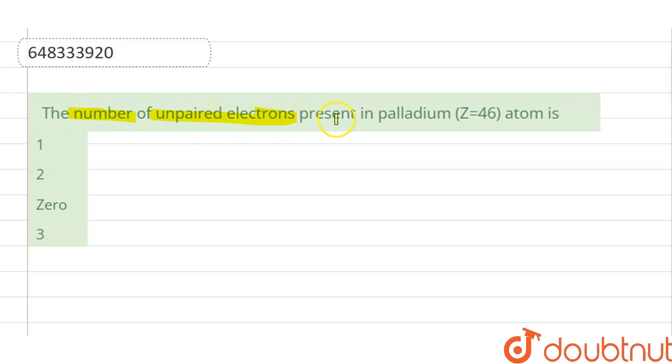The number of unpaired electrons present in palladium, Z is 46, is? So palladium atomic number is 46, so the condensed electronic configuration of palladium is...